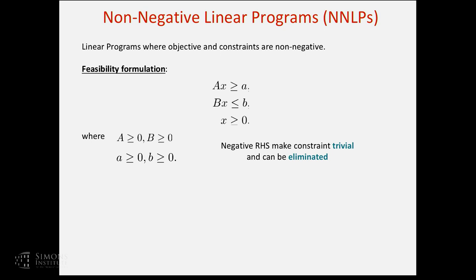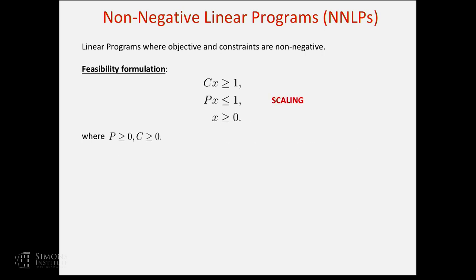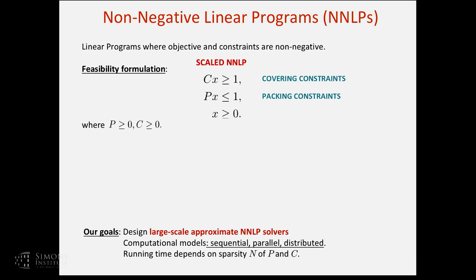Let's start with some basic transformations. You can immediately see that we can assume that the right-hand sides are positive, because if the matrices are positive and the variables are positive, there is no way the left-hand side can be negative. So the right-hand side should be positive — otherwise the constraint is either trivial to satisfy or trivially infeasible. With A and B non-negative, we can scale the constraints up or down to make our linear program look like this. I'll call these the covering constraints and the packing constraints.